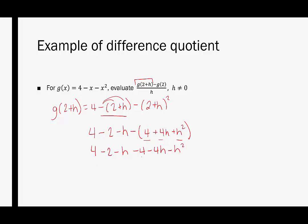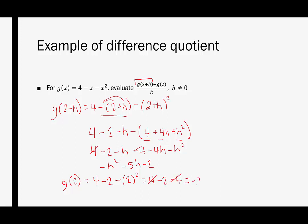Now we're going to clean this up. We have a negative h squared, minus 5h, the 4's cancel, leaving minus 2. Now let's look at g of 2. Substituting 2 anywhere we see x, we get 4 minus 2 minus 2 squared, which is 4 minus 2 minus 4, giving us negative 2.